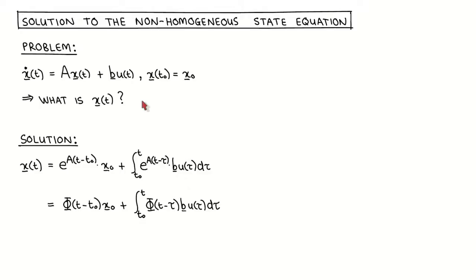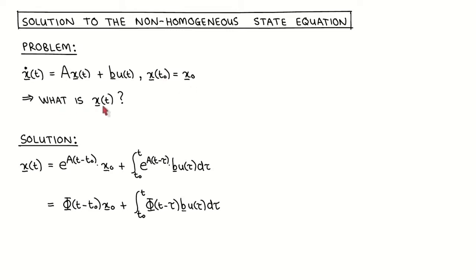The non-homogeneous state equation is given by the normal state equation x-dot equals Ax plus Bu, where the states at some initial time t0 are specified as x0. The problem we want to solve is calculating the states x(t) for all time after the initial time t0.